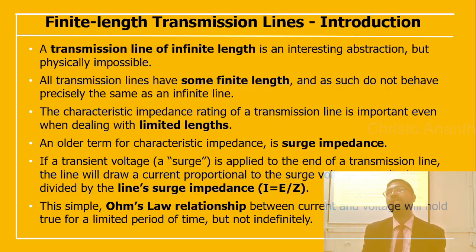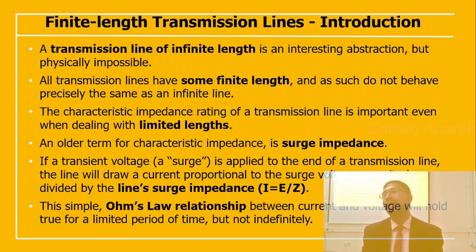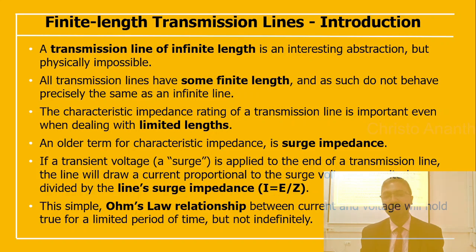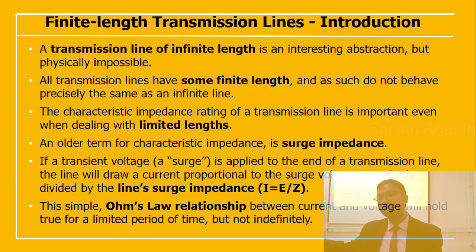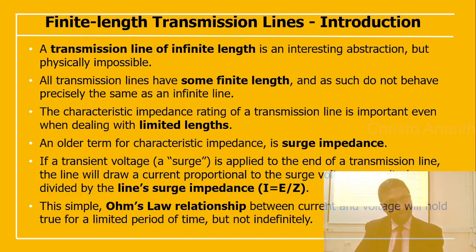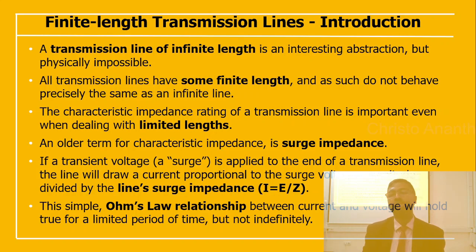Characteristic impedance was earlier called surge impedance. When a transient voltage or surge is applied to the end of a transmission line, the line draws a current proportional to the surge voltage divided by the surge impedance: I = E/Z. This Ohm's law relationship between current and voltage holds true for a limited period of time, but not indefinitely.